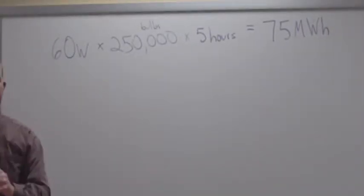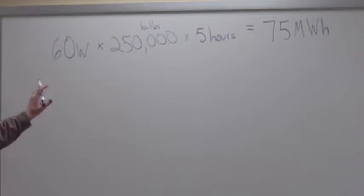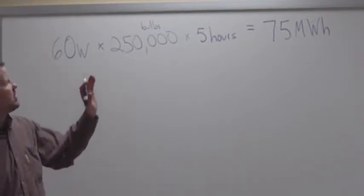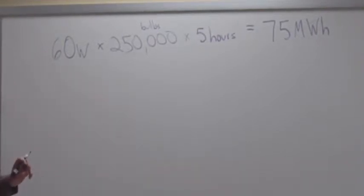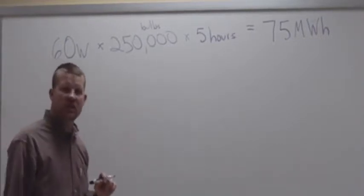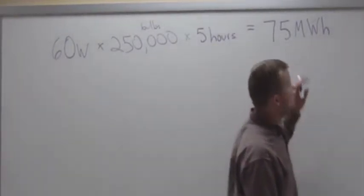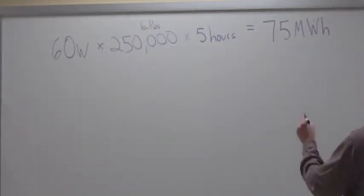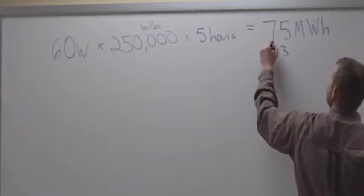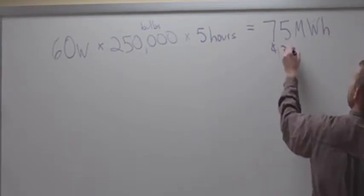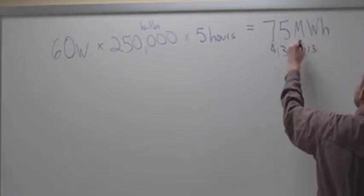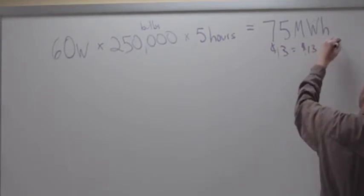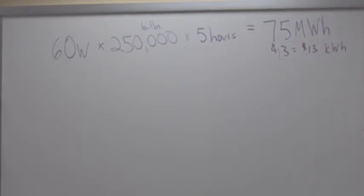Let's just do for one day. So in one day, there's 250,000 light bulbs. There are 5 hours that each light bulb is on. They each consume 60 watts of energy, 75 megawatts. Typically around here, we are paying $0.13 per kilowatt-hour. How much money is that? What are we looking at in cost right there?